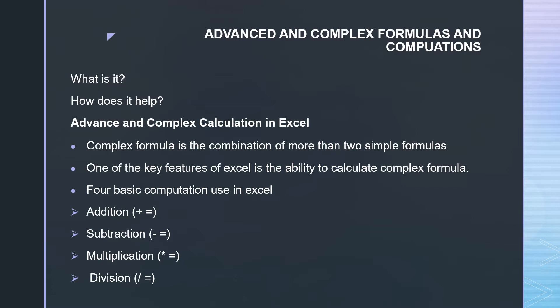Advanced and complex formulas and computation involve the cell function, which can be in the left, middle, or right. Advanced Excel functions can be combined to create very advanced and complex formulas. The cell function can return a variety of information about the contents of a cell, such as its name, location, row, column, and more. Advanced complex calculation in Excel uses a complex formula, which is the combination of more than two simple formulas.